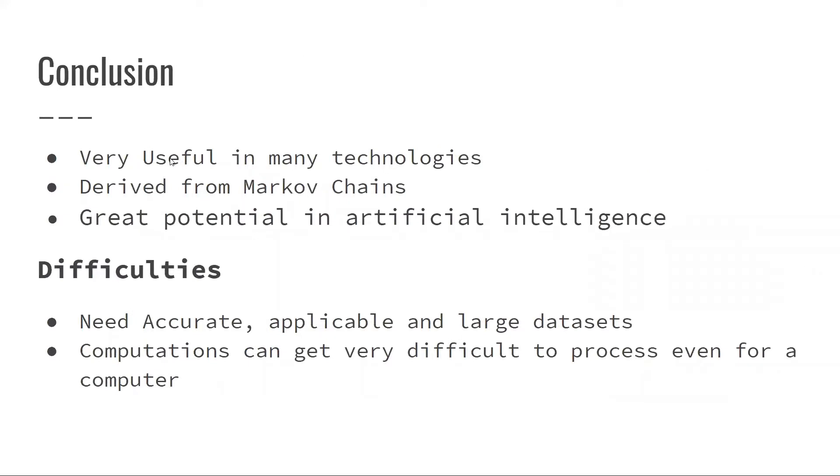So in conclusion, hidden Markov chains, like Markov chains, are very useful nowadays and used in many technologies. It has a lot of great potential in artificial intelligence, which is going to come in really handy for future technology. And some difficulties that this process has is it does need an accurate, applicable, and a very large data set to actually be able to generate anything complicated. And computations can be very difficult to process, even for a computer.